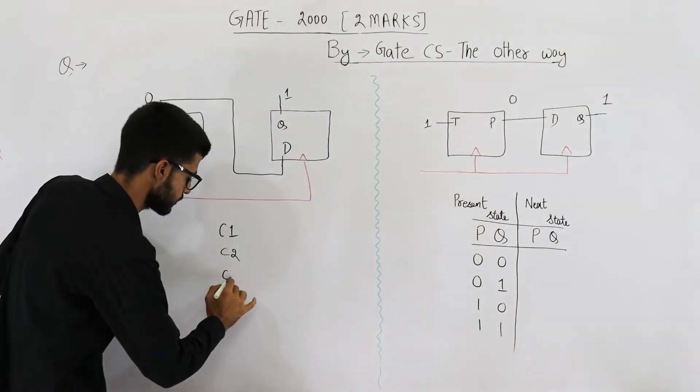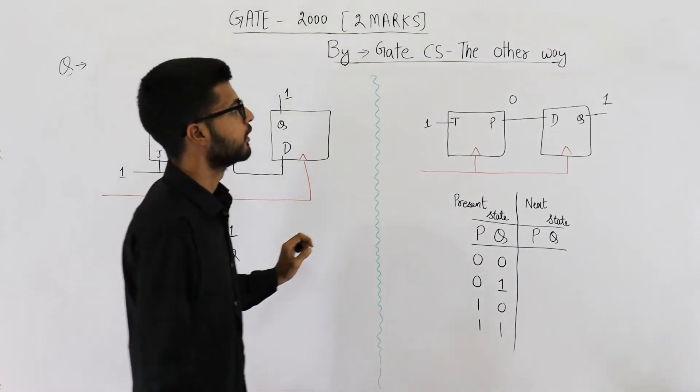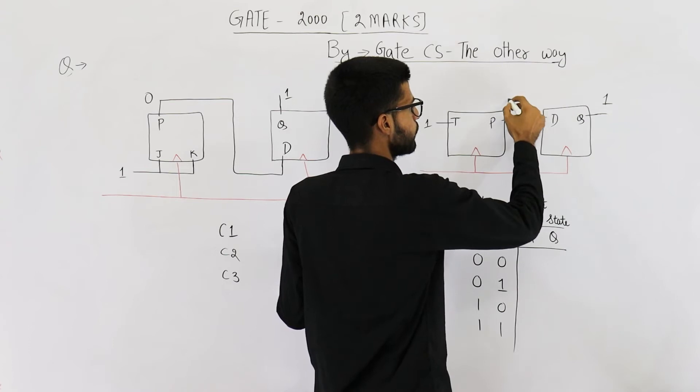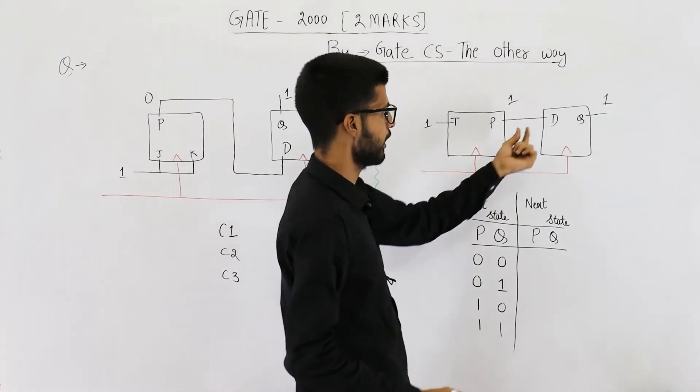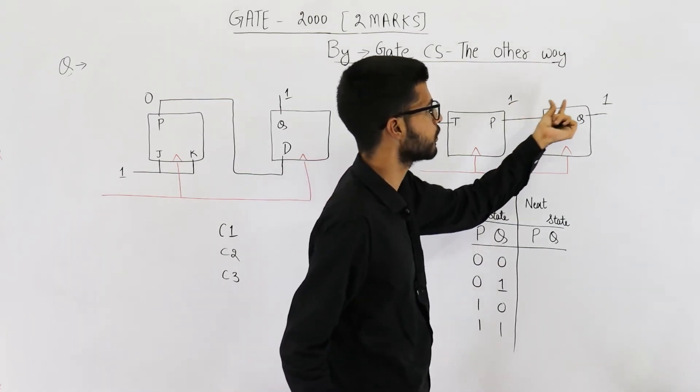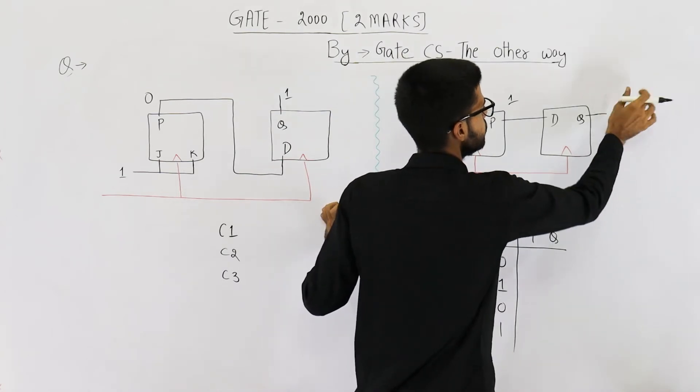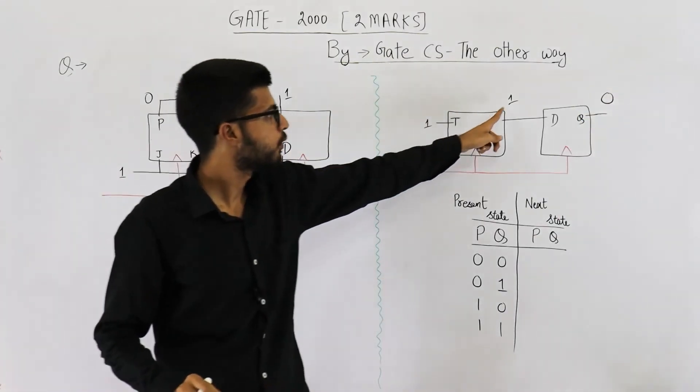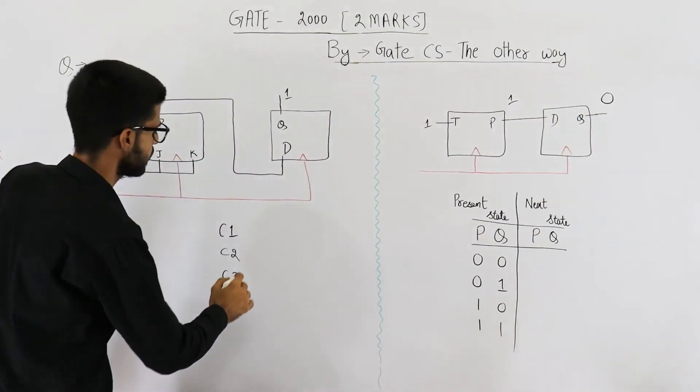Upon seeing the next clock signal which is C3 you can see this one will toggle. That means zero is changed to one and the previous value was zero. That zero will be transferred here.